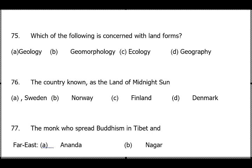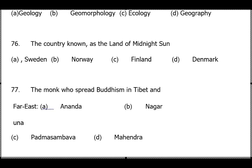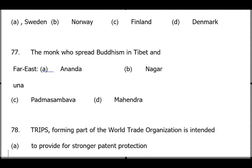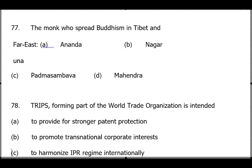Question 76: The country known as the land of midnight sun — answer is Norway. Japan is known as the land of the rising sun. Question 77: The monk who spread Buddhism in Tibet and the Far East — answer is option C, Padmasambhava.